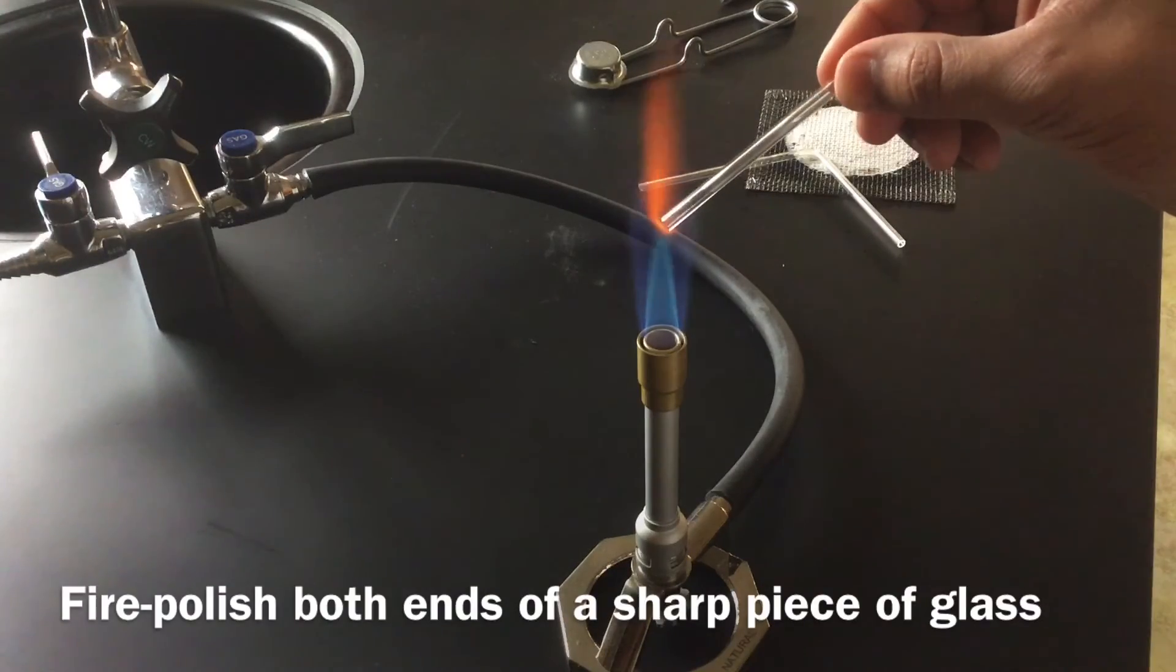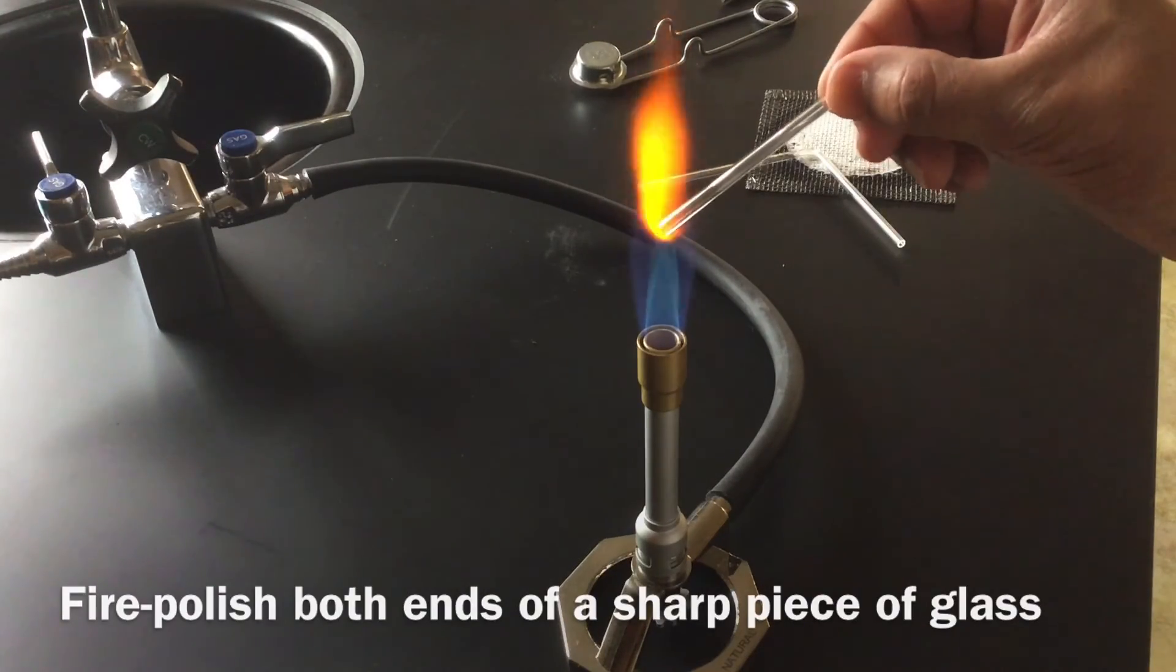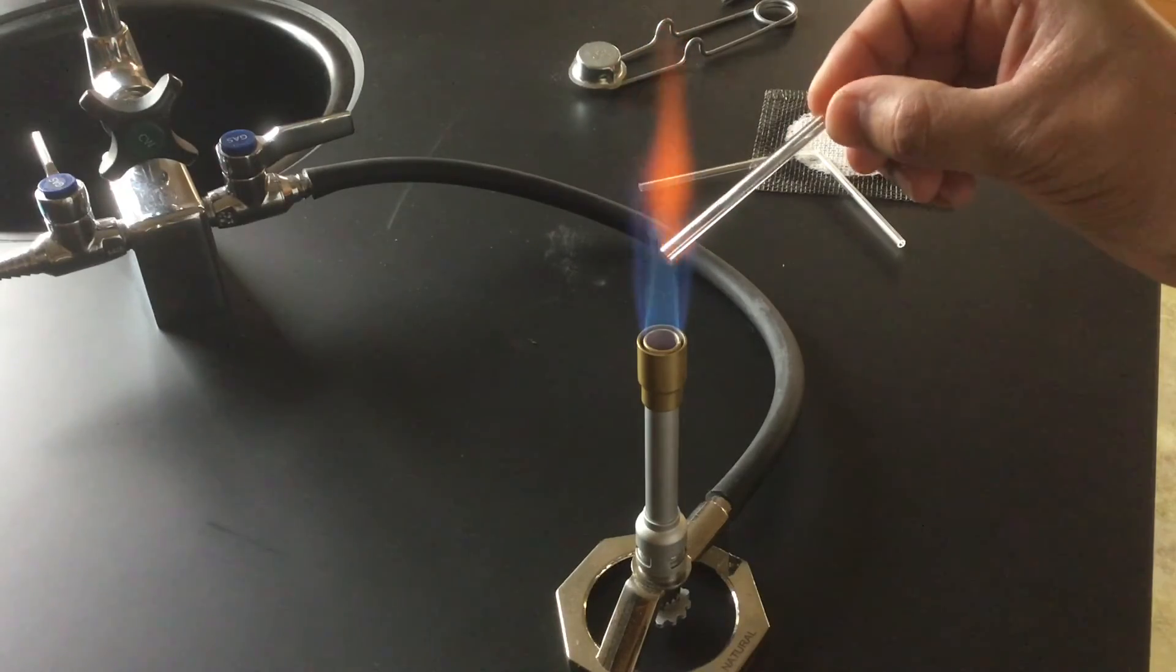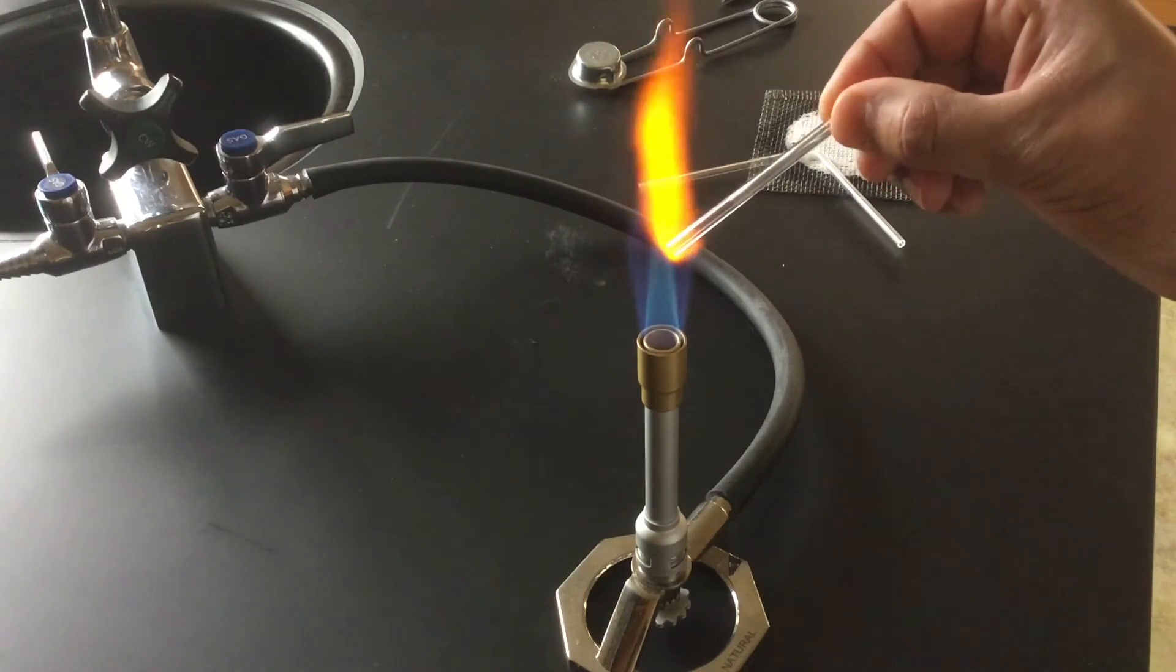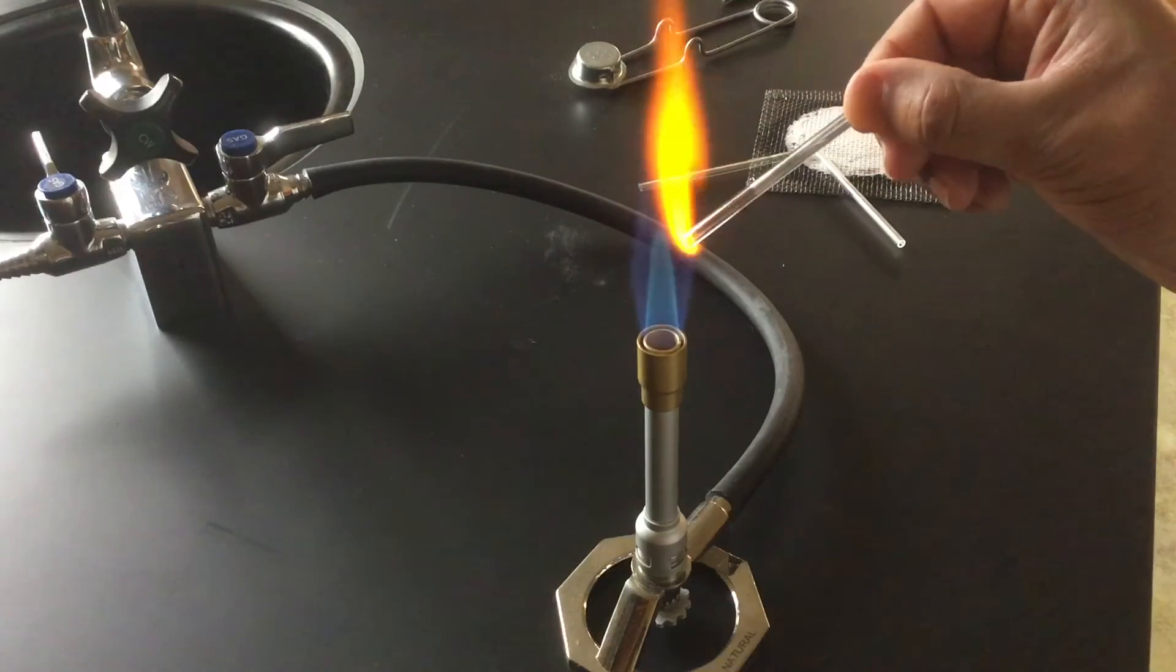Fire polish this opposite end holding it at about a 45 degree angle, just twirling it around between my thumb and forefinger in the flame. It doesn't take very long for this to happen.